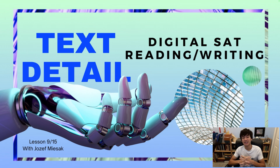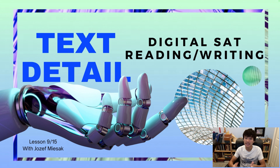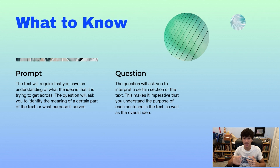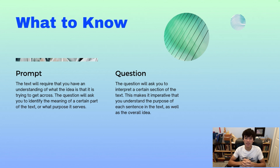Hello everybody and welcome back to the Digital SAT Reading Writing Course. Today we're going to be doing Lesson 9 out of 15 on Text Detail. A text detail question is going to require that you have an understanding of the text and the ideas that it's trying to get across. The question will ask you to interpret a certain section of the text, making it necessary to understand the purpose of each sentence as well as the overall idea.